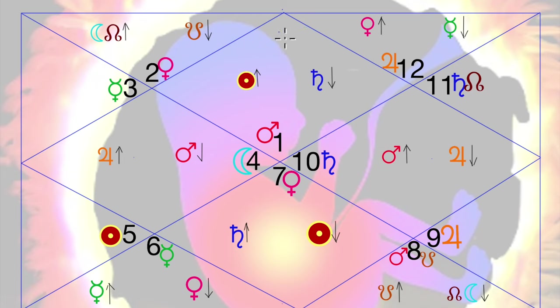So this becomes the first house, that second house, this third house. Ignore these numbers. This becomes the 4th, 5th, 6th, 7th, 8th, 9th, 10th, 11th and 12th house.